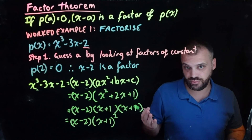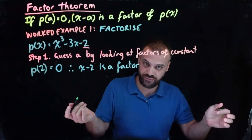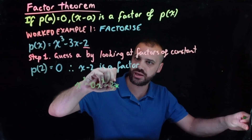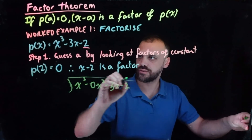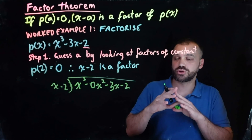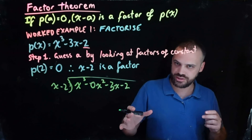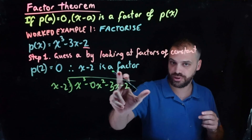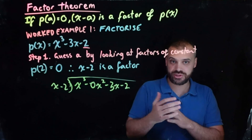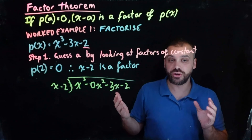If you don't like that, there is a different way. If we start with x cubed minus 3x minus 2 and know that x minus 2 is a factor, we can do polynomial division: divide x cubed minus 0x squared minus 3x minus 2 by x minus 2. If you go through that polynomial division, your quadratic will pop out and you can move forward. But that is the factor theorem: if you sub a in and it equals 0, you get x minus a as a factor, and then use that to fully factorize your polynomial.